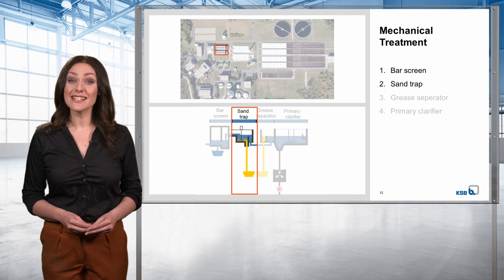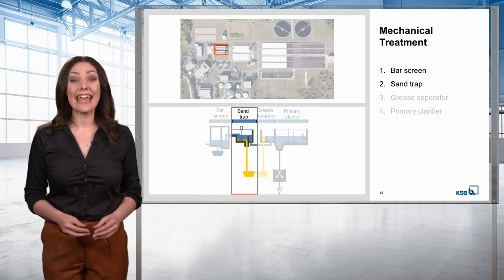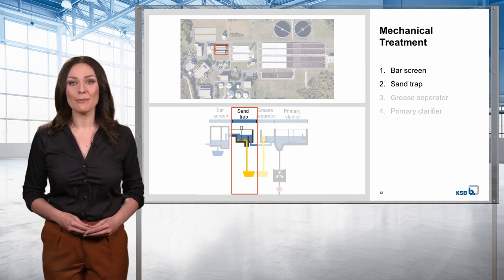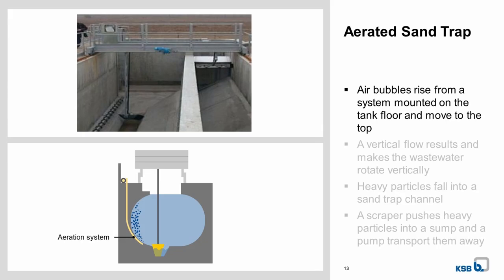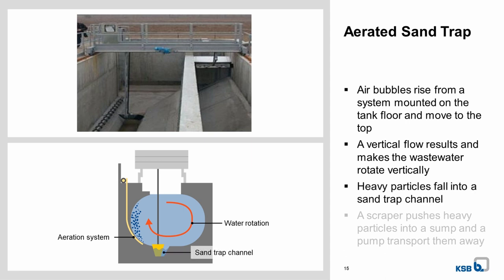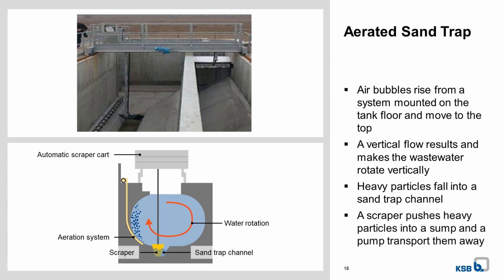The wastewater then continues to the sand trap, which can be either an aerated or a round type. In the aerated sand trap, air bubbles rise from an aeration system mounted on the tank floor and make their way to the top. This results in a vertical flow impulse in the tank and makes the wastewater rotate vertically, which separates heavy particles such as sand. Once these particles have reached the bottom, they fall into a drain channel, also called a sand trap channel. A scraper then pushes them into a sump and a pump transports them away.